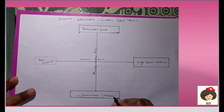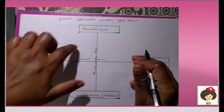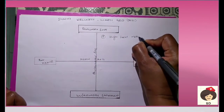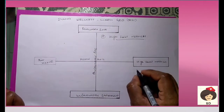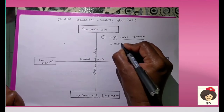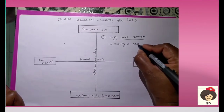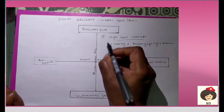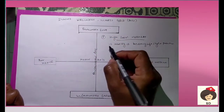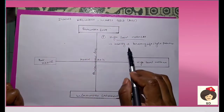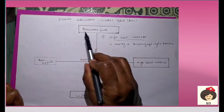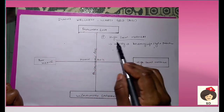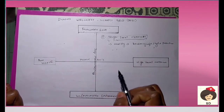Dunn divided the health-illness model grid into four quadrants. In the first quadrant, it is the high level wellness quadrant. Here, the person is healthy and follows all healthy lifestyle practices. He is also able to access health care and has support from family members, so we call this person as having high level wellness.